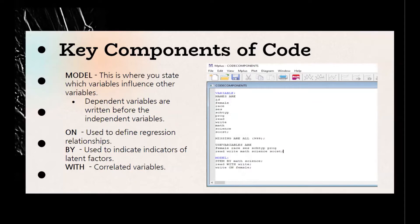The next command is the model command, where you state which variables influence other variables — essentially, where you build your theoretical model. Dependent variables are written before independent variables, separated with on, by, or with. On defines regression relationships; for example, write on female means gender is predicting writing ability. By indicates indicators of latent factors; for example, STEM by math and science means math and science are indicators of STEM ability. With represents correlated relationships; for example, read with write means reading and writing ability are correlated.